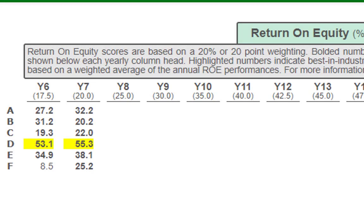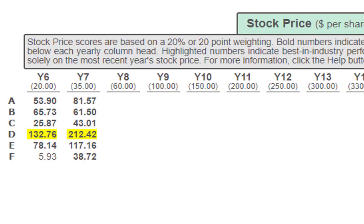Next we have return on equity — every team met expectations, with Company D best in industry at 55.3. But remember, you don't have to be best in industry in any of these categories to become number one in the simulation — it helps, but it's not required. Stock price: everyone met expectation, Company D still best in industry at $212. Looking at the year 6 to year 7 changes — Company B went down a few points but is still meeting expectations, Company C went up, Company E almost doubled, and Company F went almost eightfold. Great job everyone.